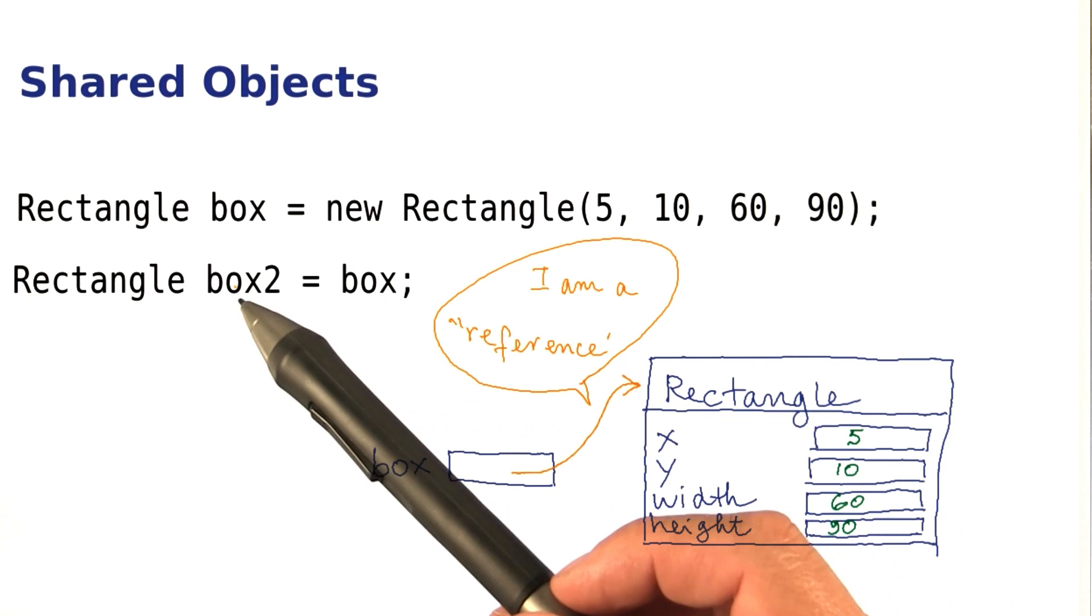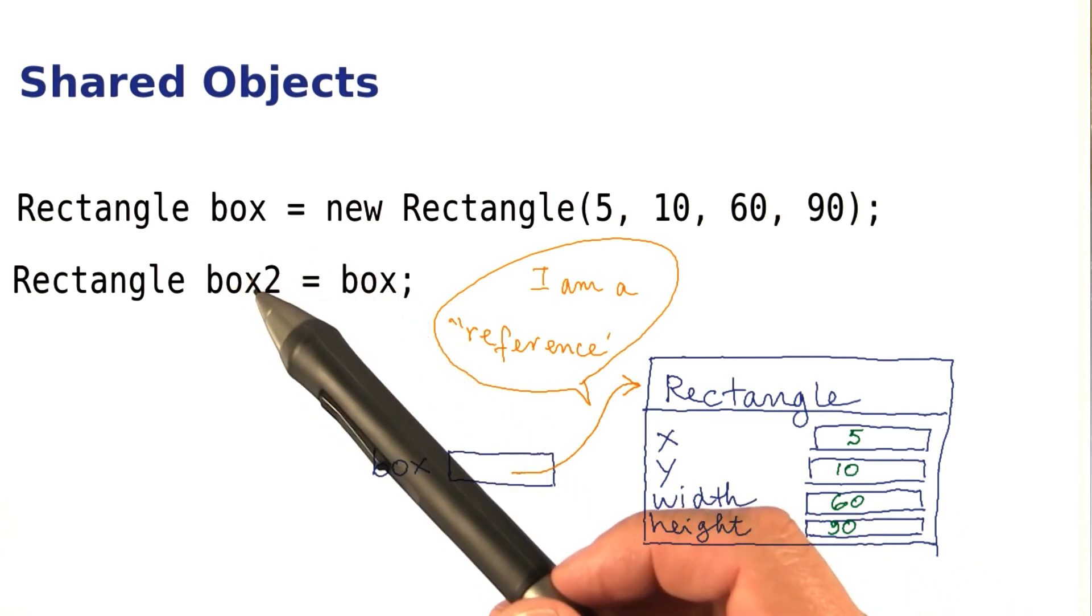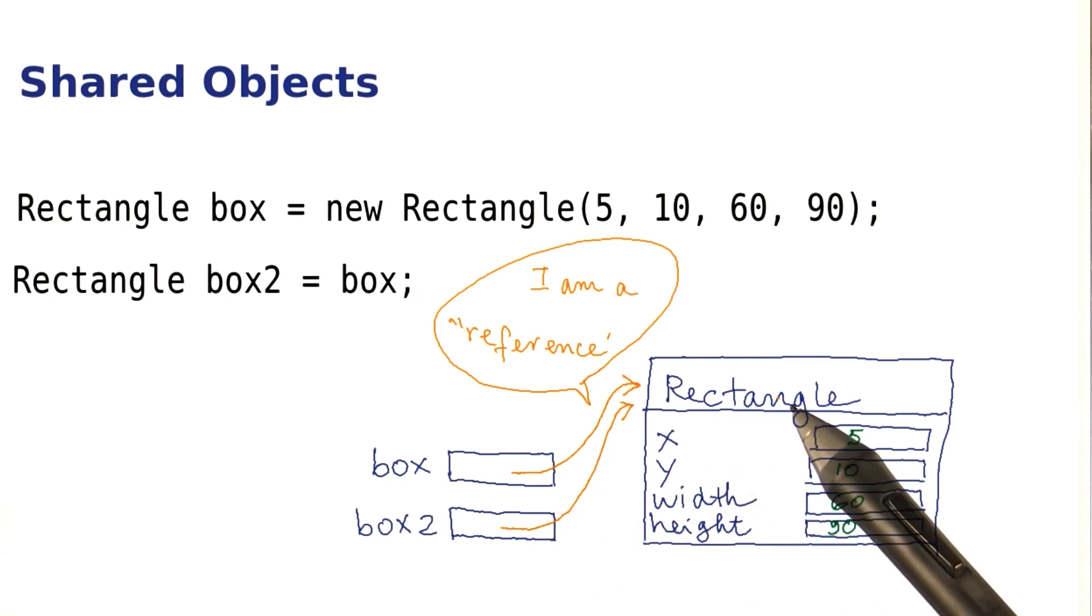Now suppose we make a second variable and copy the first one into the second. In that case, we simply copy this reference into this variable. As you can see, now both the variable box and the variable box two refer to the same object.